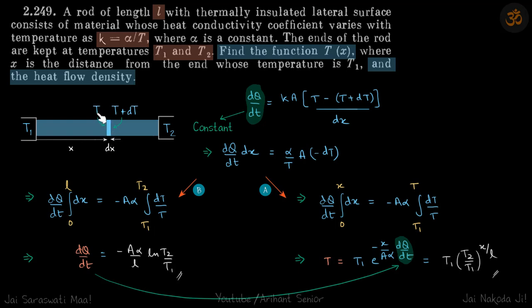We'll write heat current for that, which will be constant for the whole rod. So that is our approach. At distance x, we are taking the element dx, and at the beginning the temperature is T, and after dx the temperature becomes T plus dT.